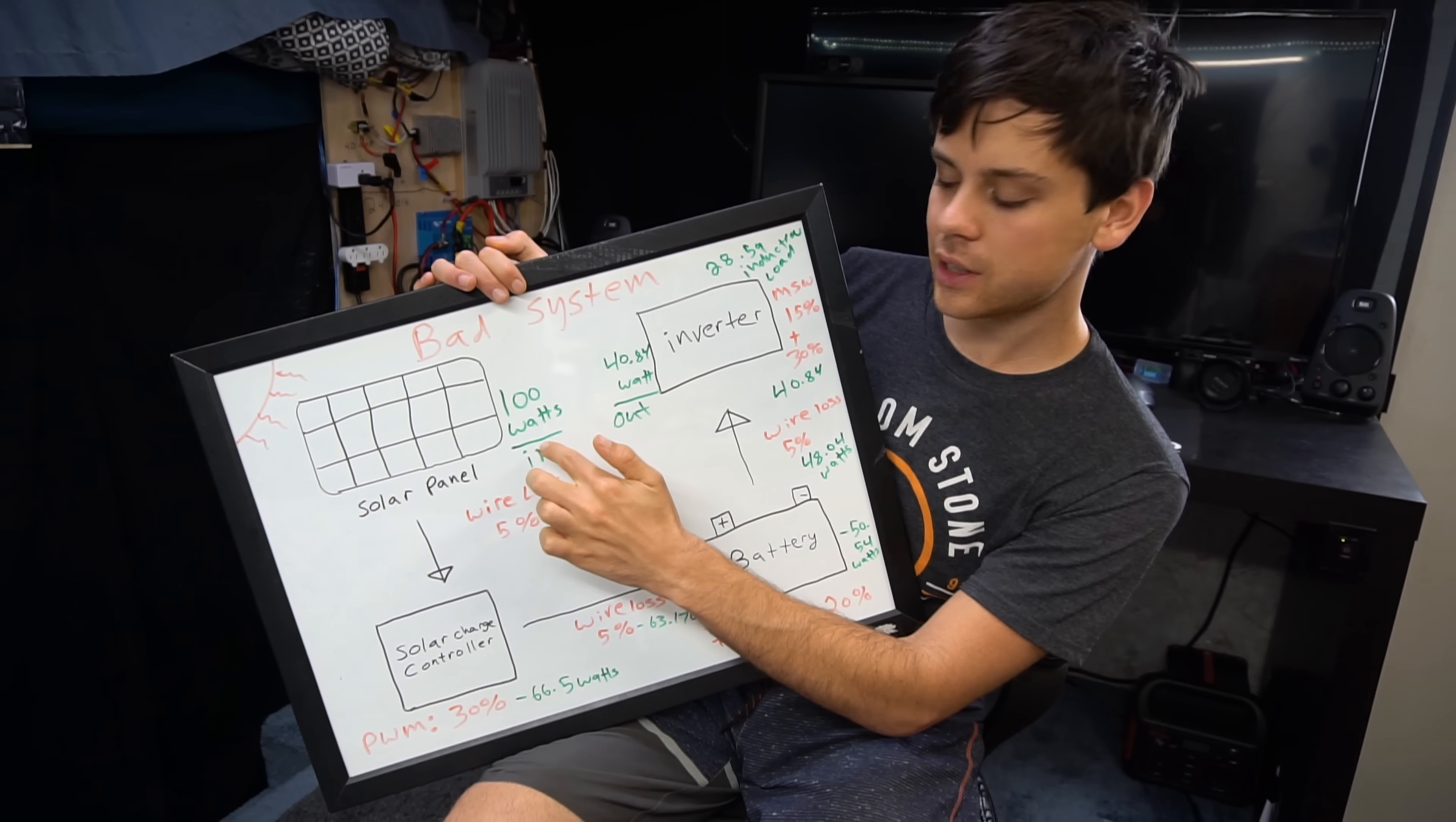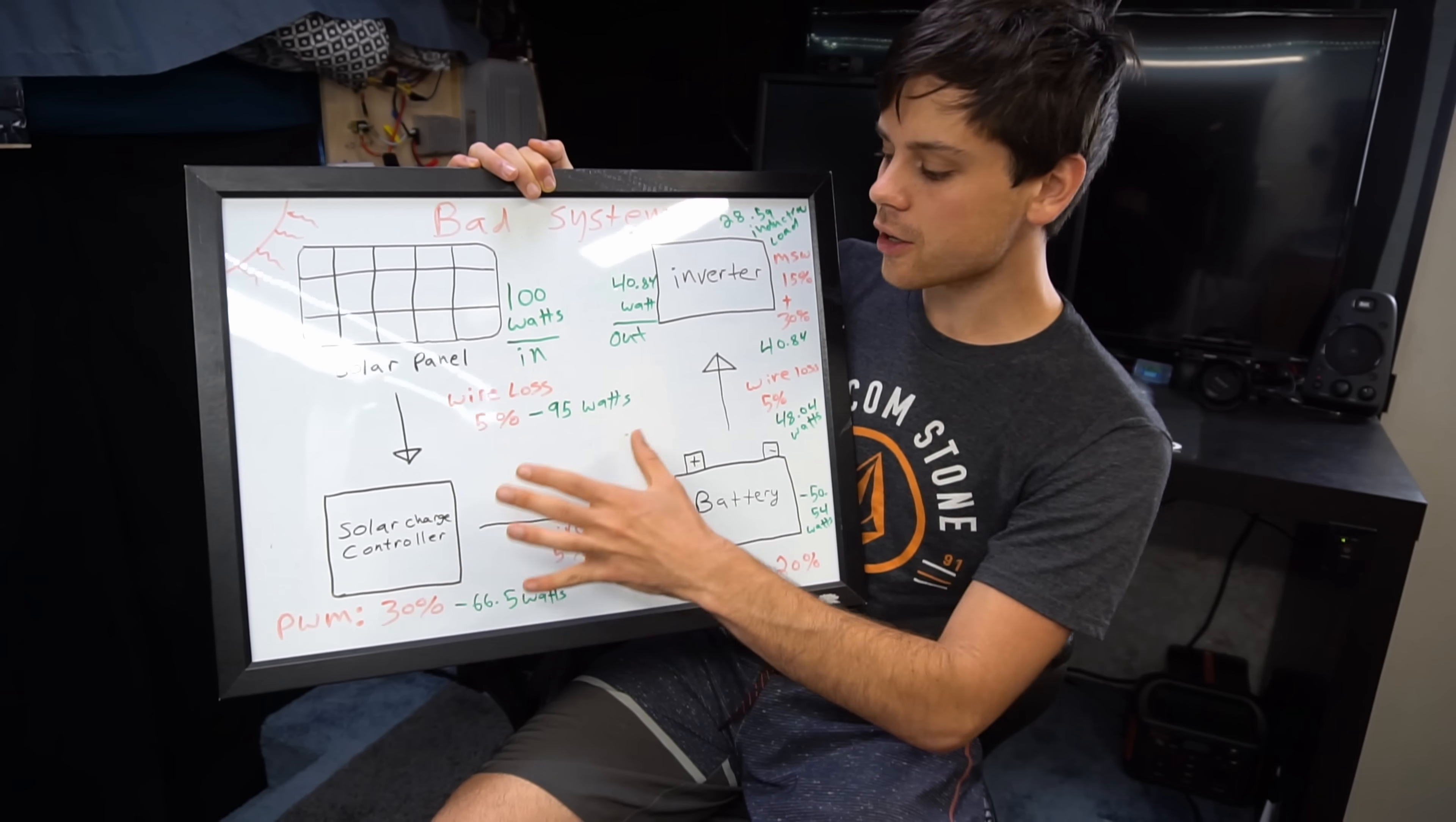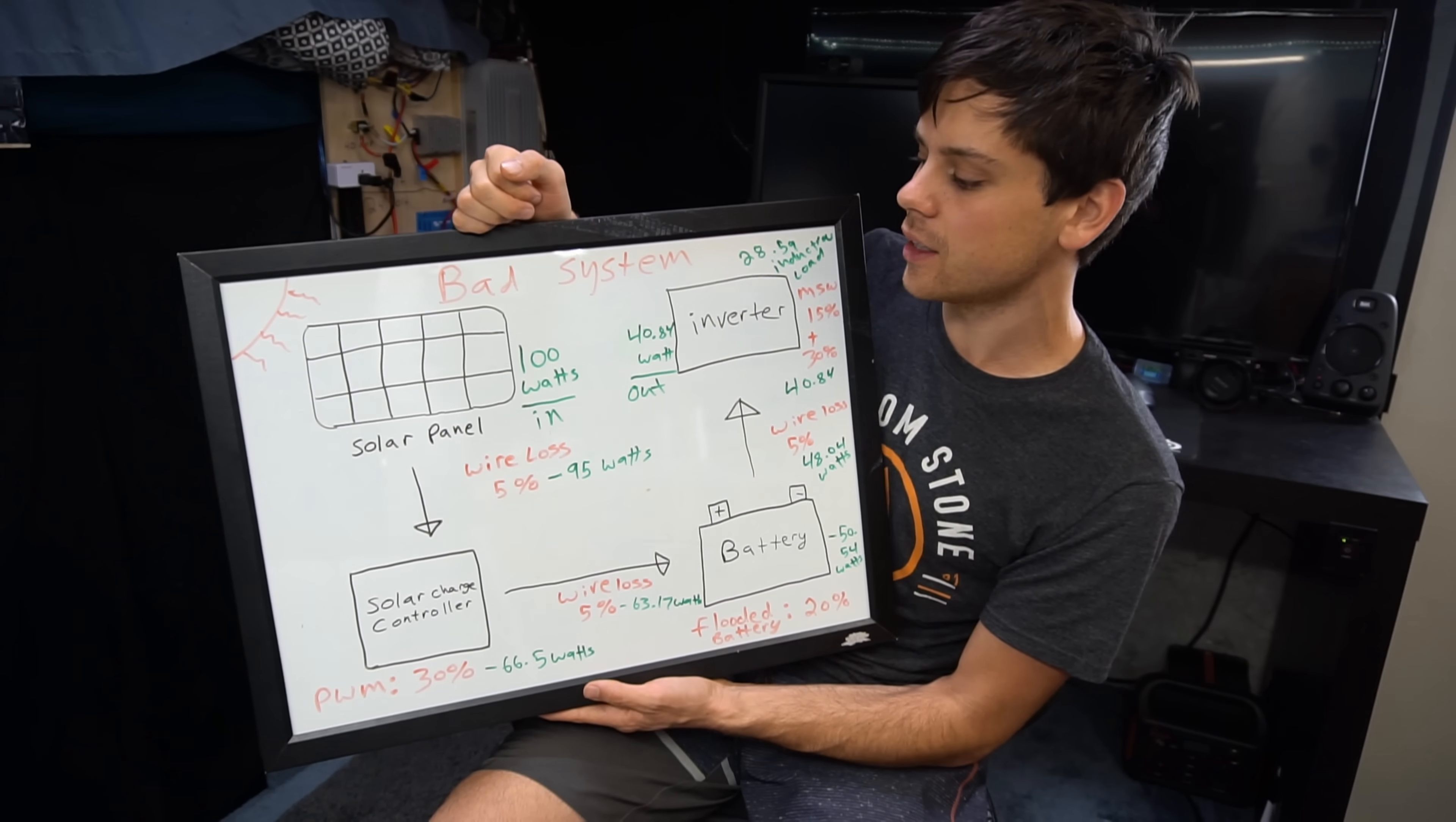So 100 watts goes in, about 40 watts goes out and this is a pretty common system. I've seen tons of people use the Costco batteries, use a pulse width modulation controller, mess up their wires a little bit. I've seen this on all sorts of YouTube channels for the van life community and then they have a cheap Chinese modified sine wave inverter. So this is how much power you're actually producing in a badly designed system.